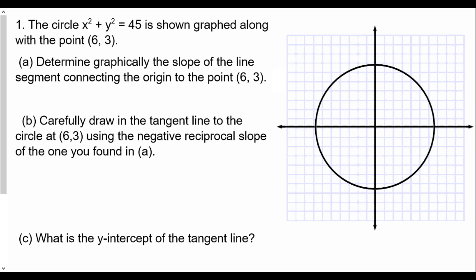Circle x squared plus y squared equals 45 is shown graphed along with a point six comma three. What we're going to do is plot six comma three — we go one two three four five six, up three one two three — so this is the point we're talking about here.